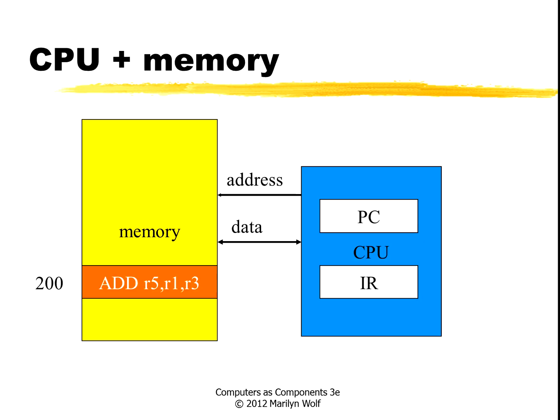Here's an example. We have the memory on the left side and the CPU on the right side. The memory and CPU are connected by what's called a bus, which allows the CPU to send an address to memory to tell the memory what location to access. The memory can either send data back to the CPU for a read, or the CPU can send data to be written to the memory.